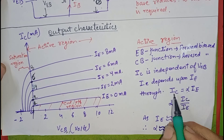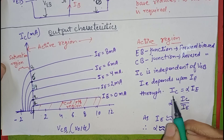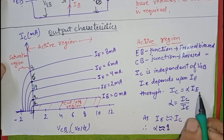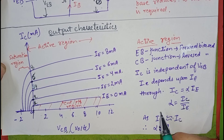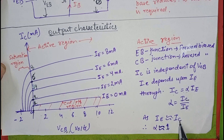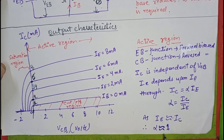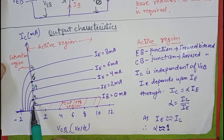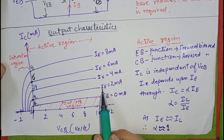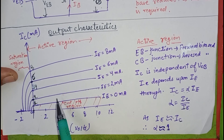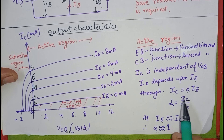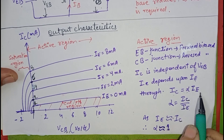Through the equation for common base configuration, IC equals to alpha times IE, where alpha is the current amplification factor for common base configuration. We know IE is almost equal to IC because the value of IB is very less, so alpha is almost equal to 1. That's why IC is almost equal to IE. In the active region, the transistor is used as an amplifier because IC is proportional to IE.